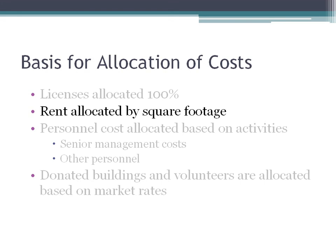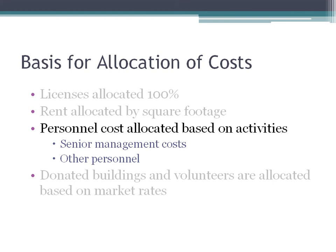Rent, for example, is allocated based on space used by each one of the offices. Wages and salaries can be allocated based on the time the person has spent in activities related to information systems. For senior management, it is not easy to understand how their time fits various costs under the organization. The cost of management may be allocated proportional to the budget of the unit.